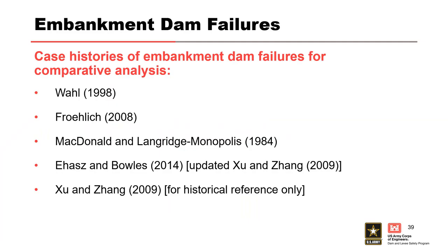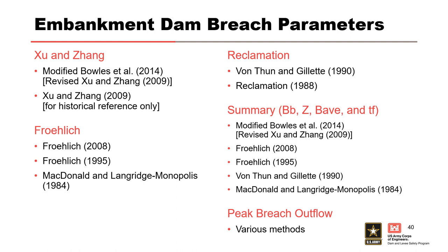In the RMC Embankment Dam Failures Toolbox, there are separate worksheets for each case history database. Filters are set up to sort by failure mode and embankment and hydraulic characteristics to find a similar dam to compare breach characteristics. Wall 1998 contains the most case histories at 108 and contains the most detailed information and is recommended for usage. Froelich 2008 contains 74, McDonald and Longridge Monopolis 1984 contains 42, and Xunjiang 2009 including the update by Ehausen Bowles 2014 contains 75. In the RMC Empirical Embankment Dam Breach Parameters Toolbox, separate worksheets exist for each regression equation, and the geometric parameters and breach formation time from various methods are summarized on a separate worksheet for comparison. Peak breach outflow from various methods is also included in the toolbox.